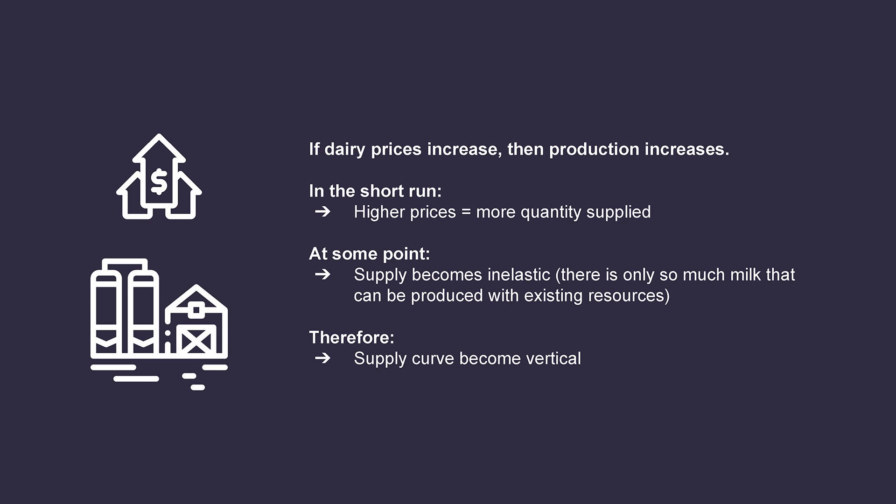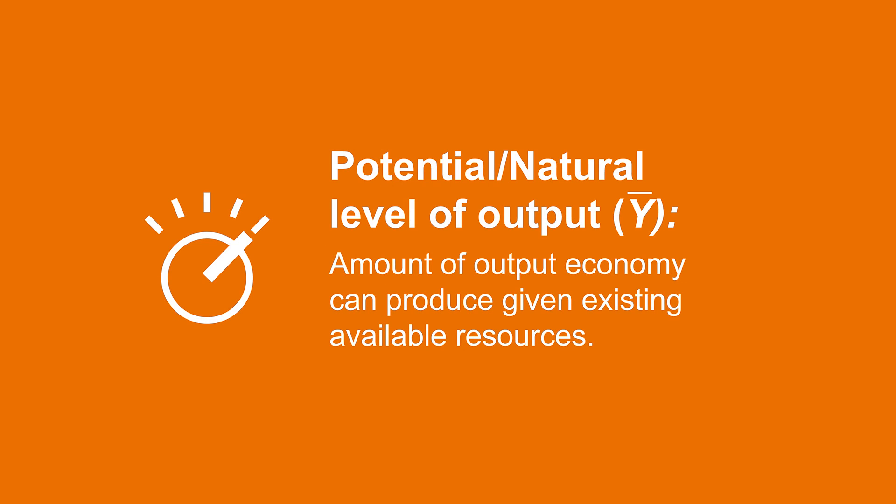In the short run, aggregate supply responds to price changes. Higher prices mean more output supplied. But given existing technology and finite resources of capital, labor, and whatever Mother Earth provides us with, there is only so much output we can produce. Once all available resources are used up, the economy is producing at its maximal capacity and won't be able to produce more even if it wants to.